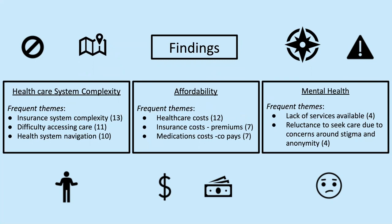Affordability was a common theme, and this was an issue no matter what insurance people had. We spoke with people with private insurance, public insurance, and no insurance, and they all reported issues with premiums and co-pays and affordability overall.